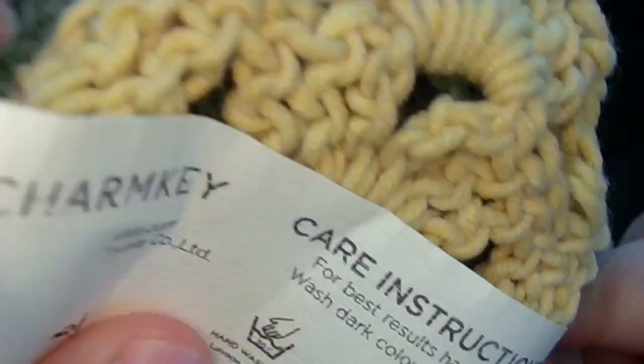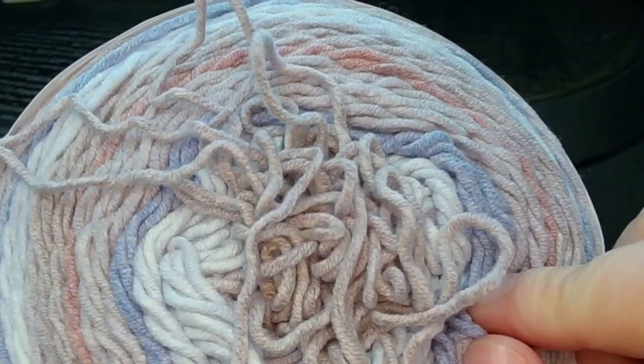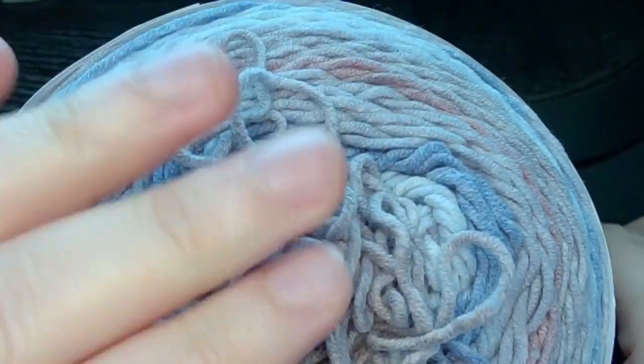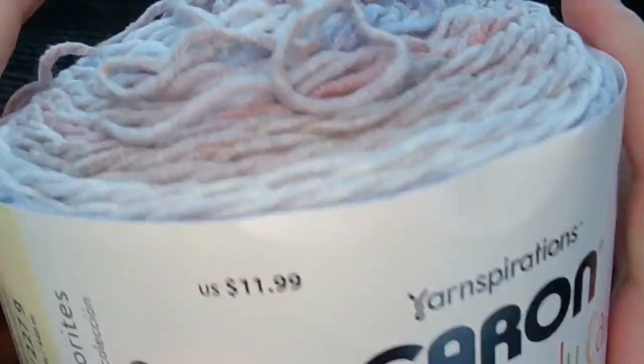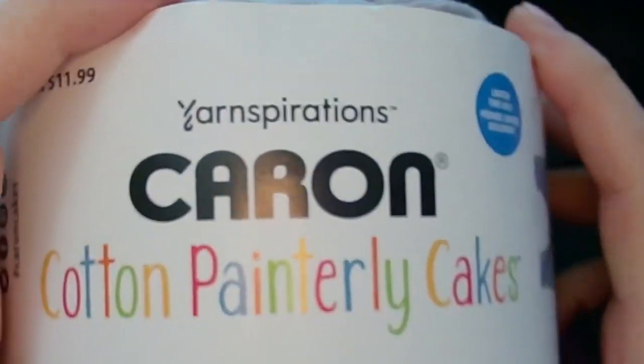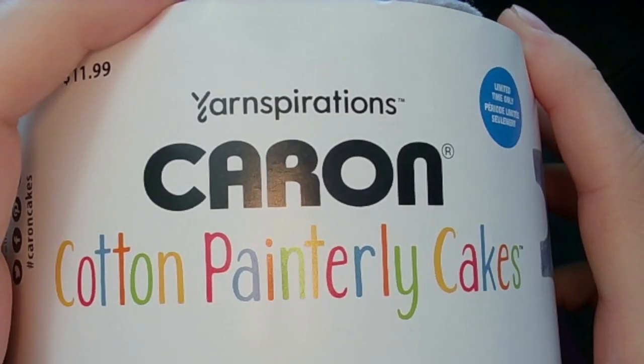They actually brought the color back that I used for my grand niece. It's available in the normal Caron wherever they keep your Caron cakes at Michael's. Normally it's towards the end of the aisle, not in the center or anything.